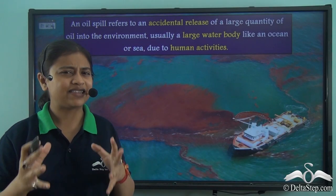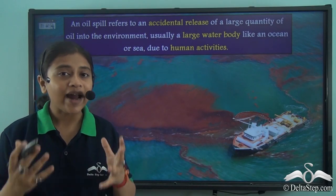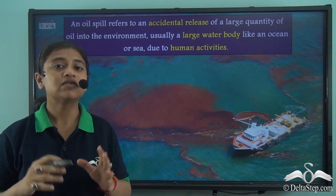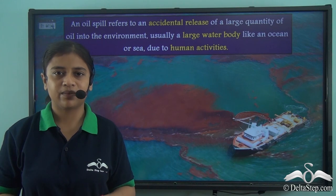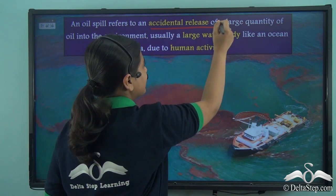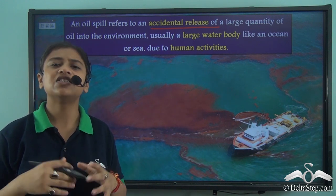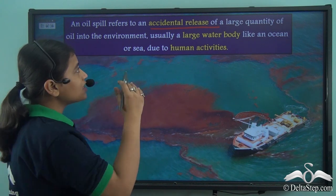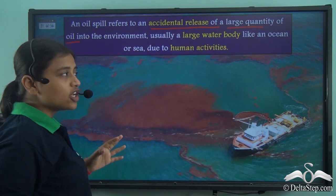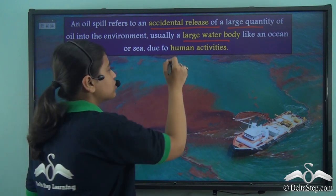What exactly is an oil spill? Have you ever made a mess when you are not in a position to understand where to start from and how to go about the cleaning? The environment too suffers from such a mess — this occurs when an oil spill takes place. An oil spill is the accidental release of a large amount of oil into the environment, usually the marine environment, and this is generally because of human activities.